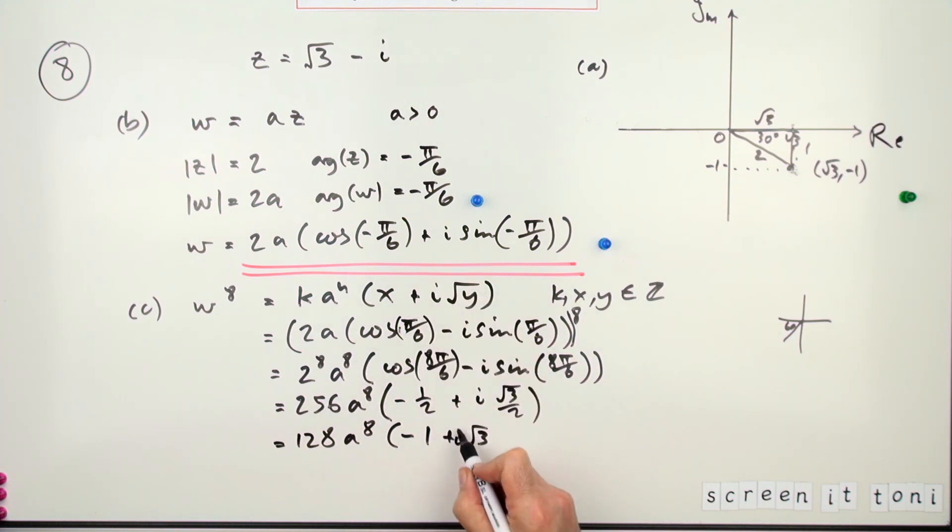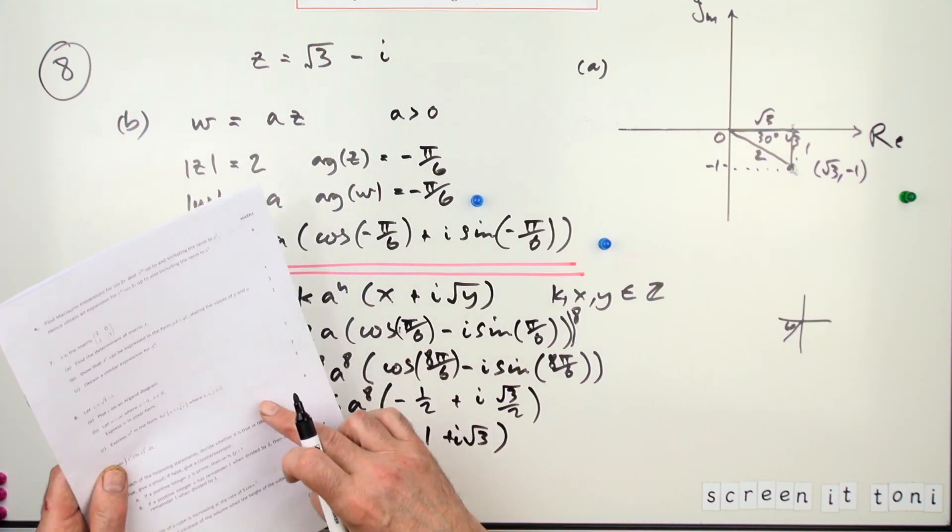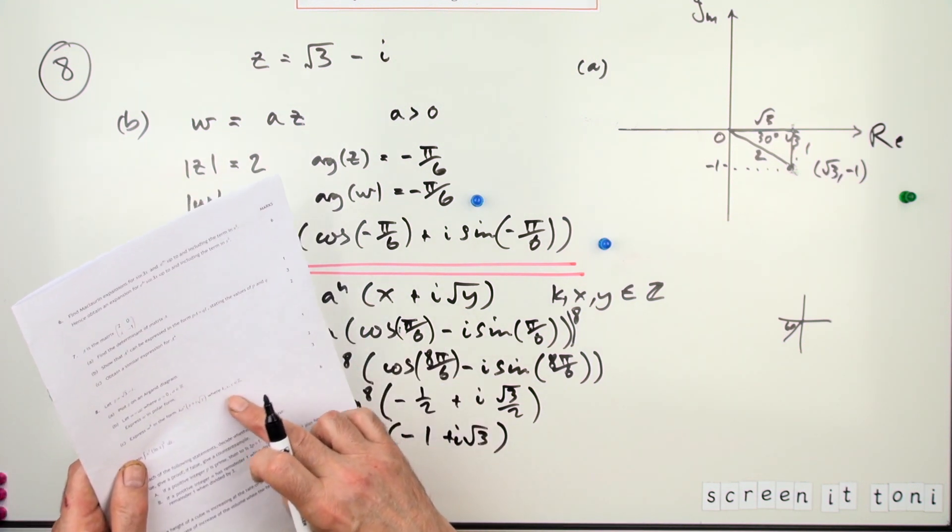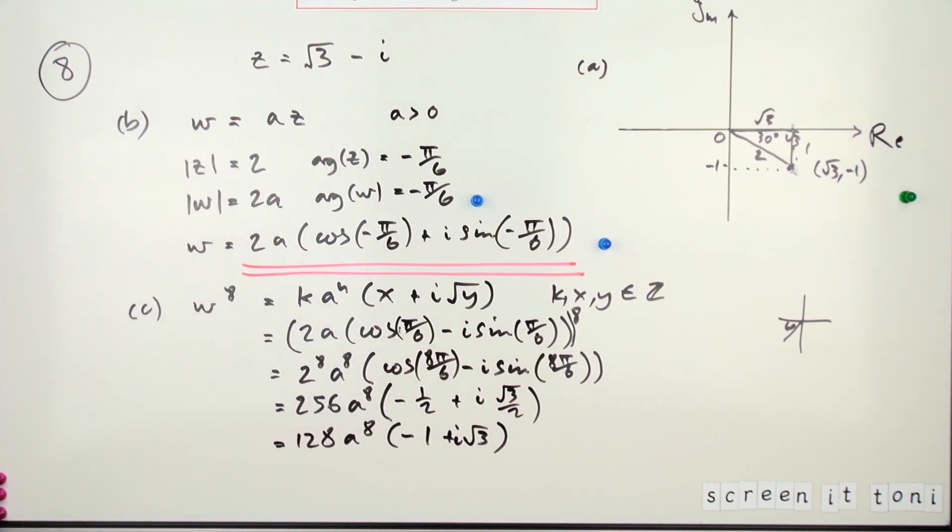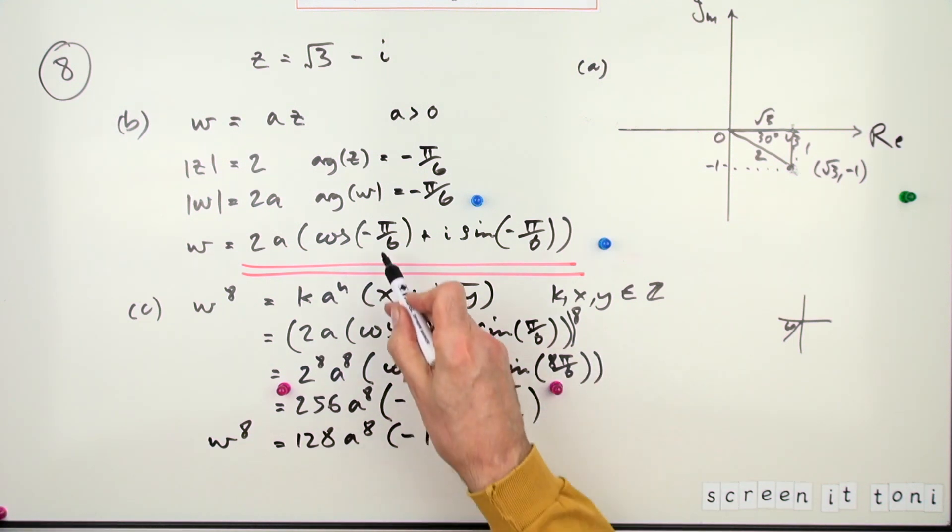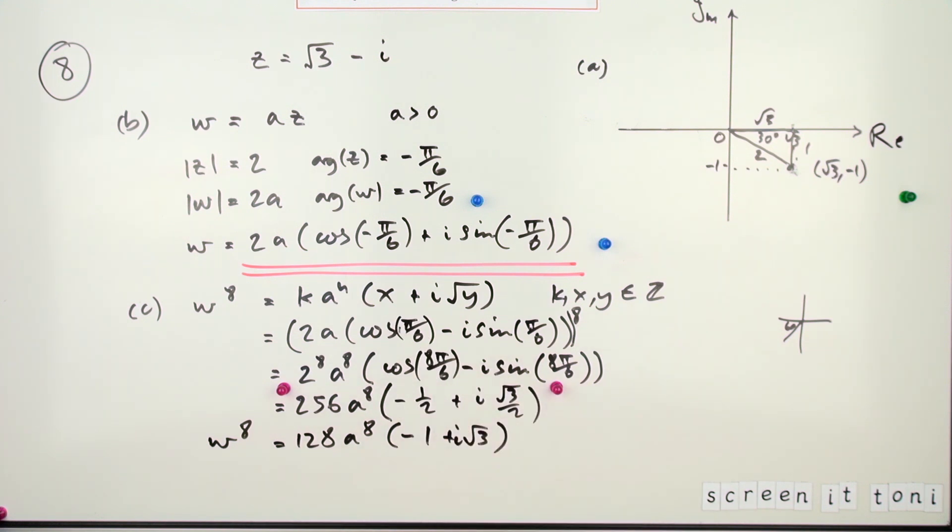Dropping that down to 128·a^8, now it'll just be −1 + √3·i, or rather the way they've got it, i·√3. Now it doesn't explicitly say stating the values of k, x, and y, so that should do it. The marks were: get the modulus, so it was just power 8, get the new argument, multiply the angle by 8—whether you left it in the original form or rearranged it—and then finally put it into the correct form.